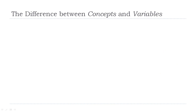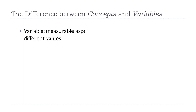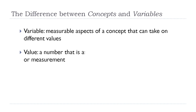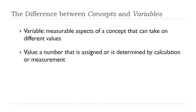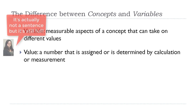So what is the difference between a concept and a variable? A variable is the measurable aspects of a concept that can take on different values. Values are numbers — a value is a number that is assigned or determined by calculation or measurement. Let me give you an example.